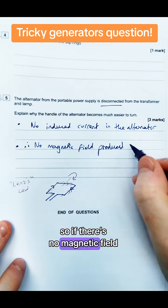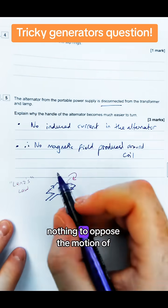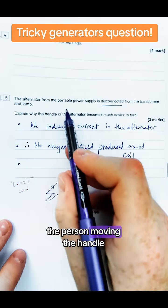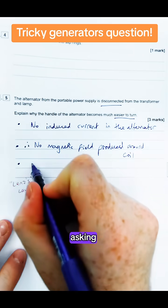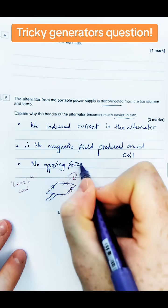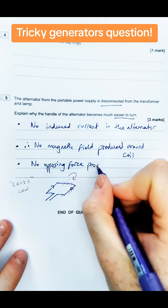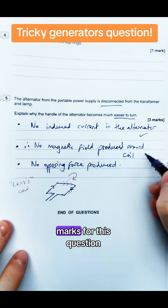Basically there's going to be nothing to oppose the motion of the person moving the handle and therefore it's going to be much easier to turn which is what the question is asking. So it says something like no opposing force produced or force opposing the motion of the coil and that'll be enough for three marks for this question.